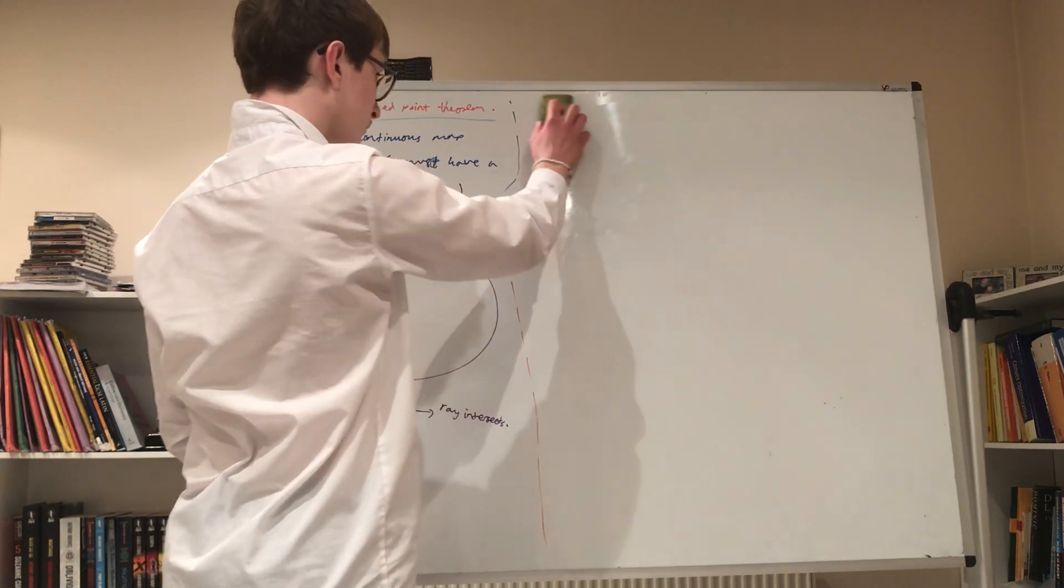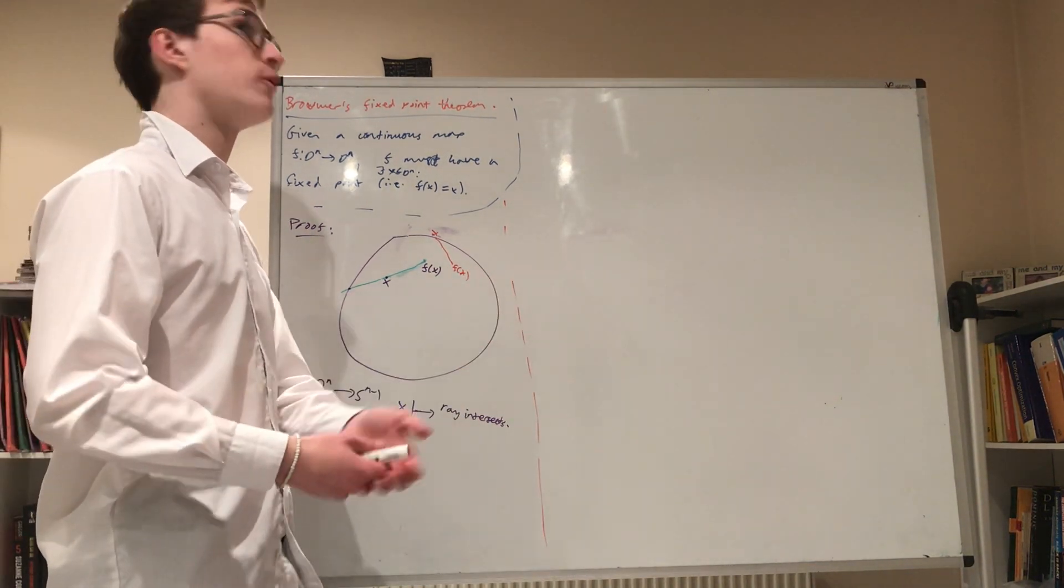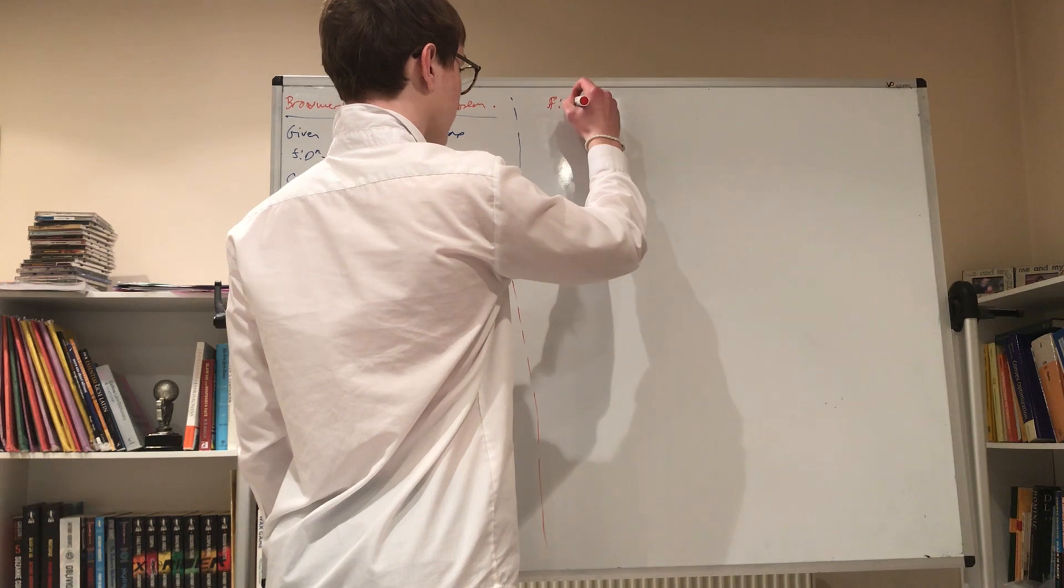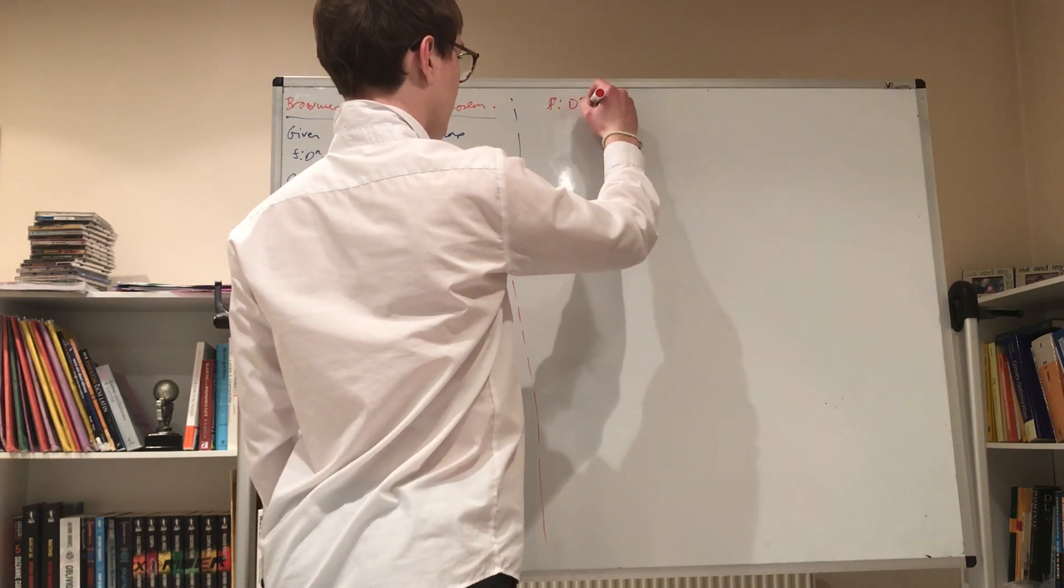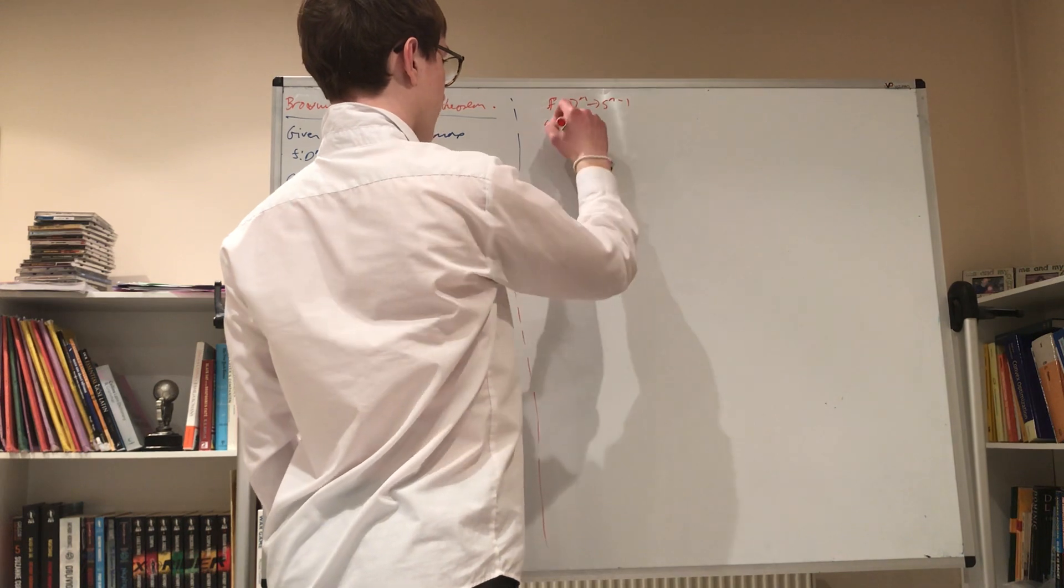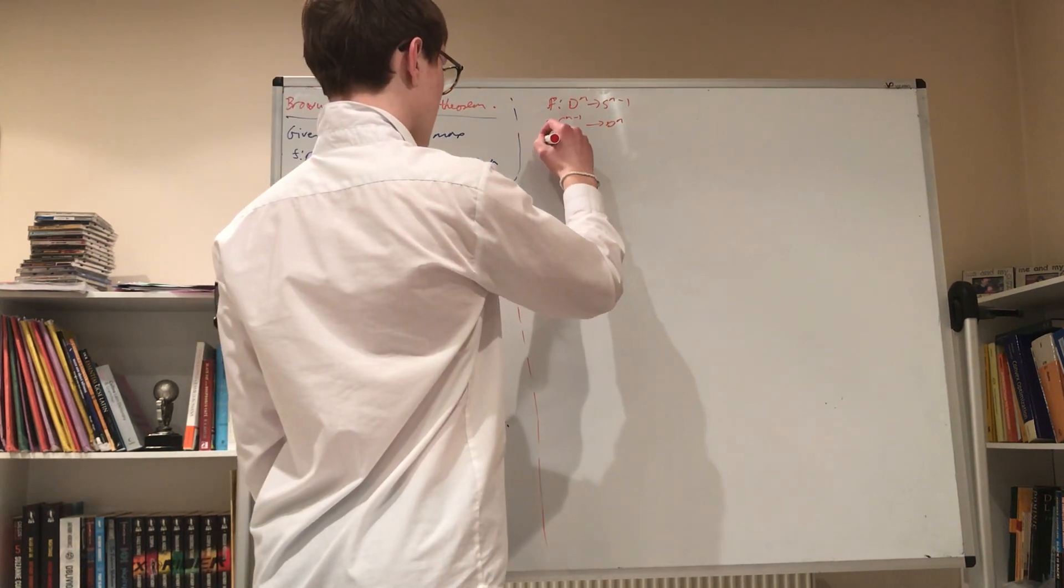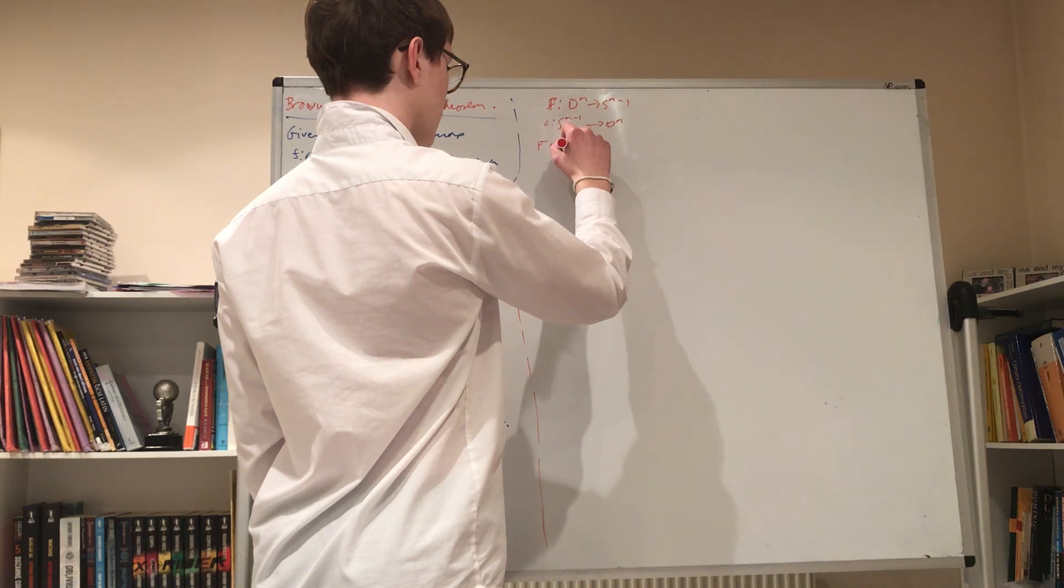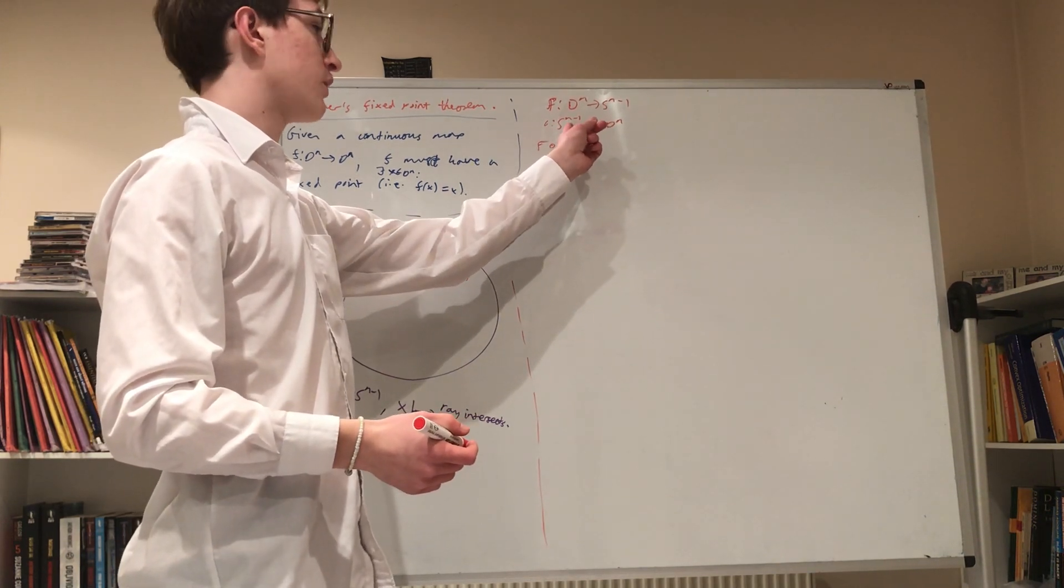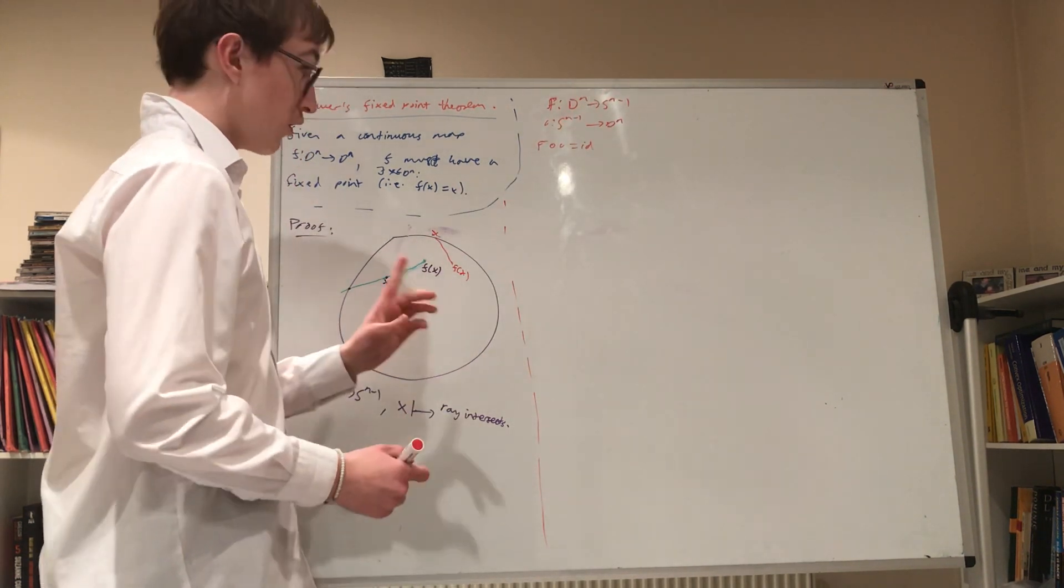Now, retractions can be stated in a more, I don't know, category, a more formal way as maps. If we have F, capital F, from the disk to the n minus 1 sphere and we have the inclusion iota from the n minus 1 sphere to the disk, well, then the composition f composed with iota is equal to the identity because all this is saying is that every point in the n minus 1 sphere is mapped to the same point under f. So, now, what would this imply?